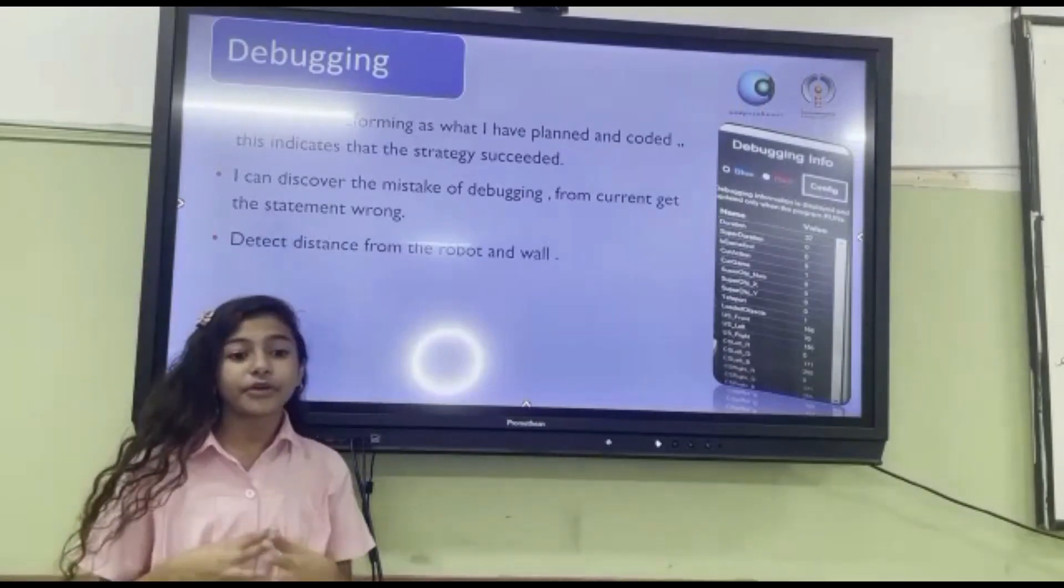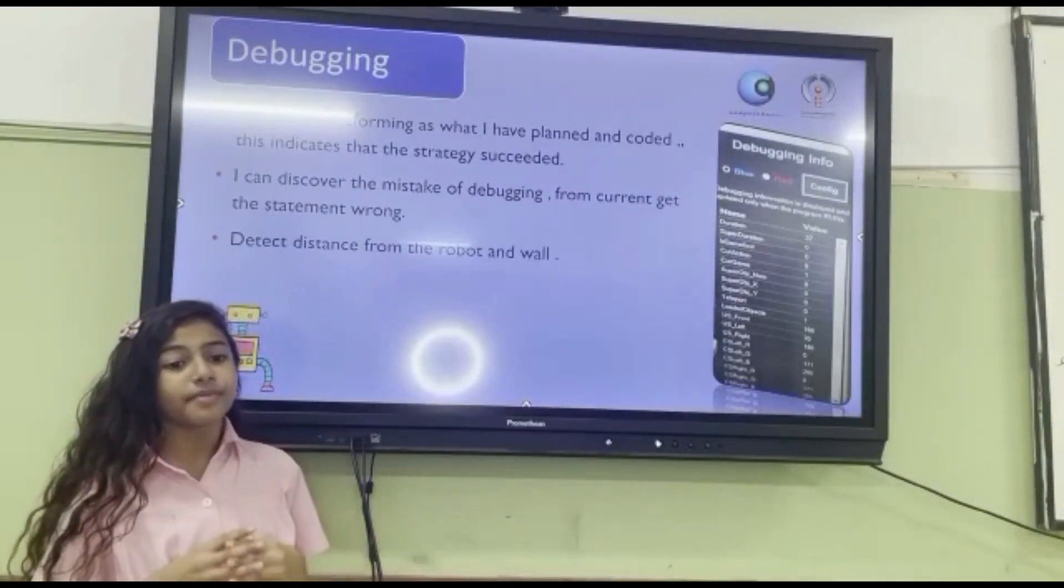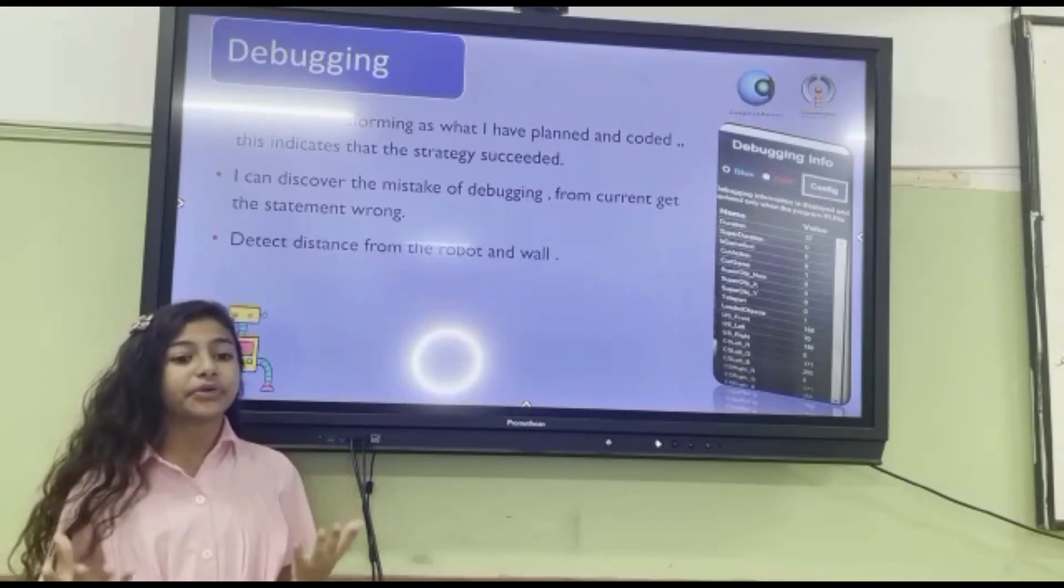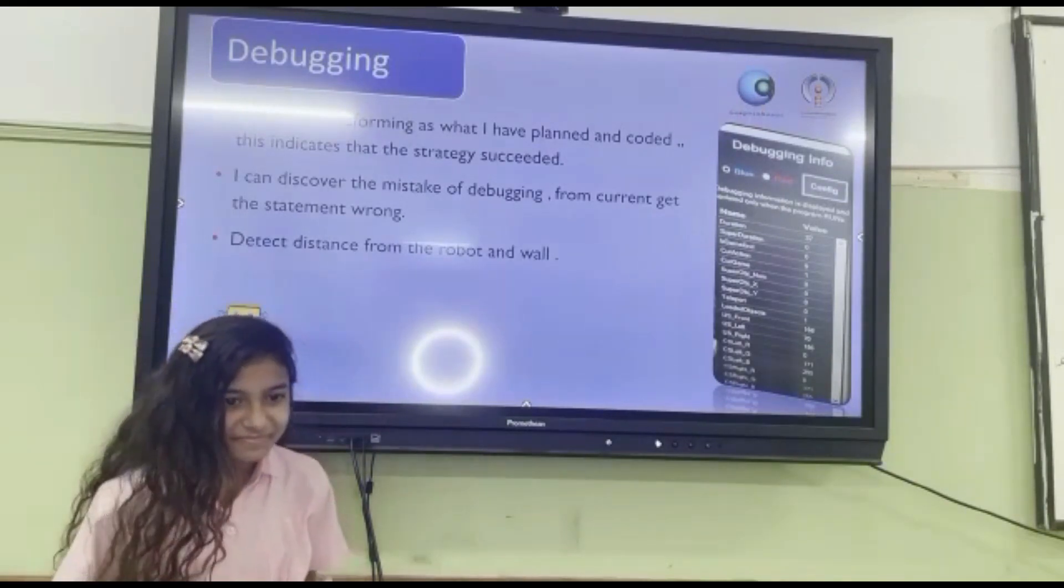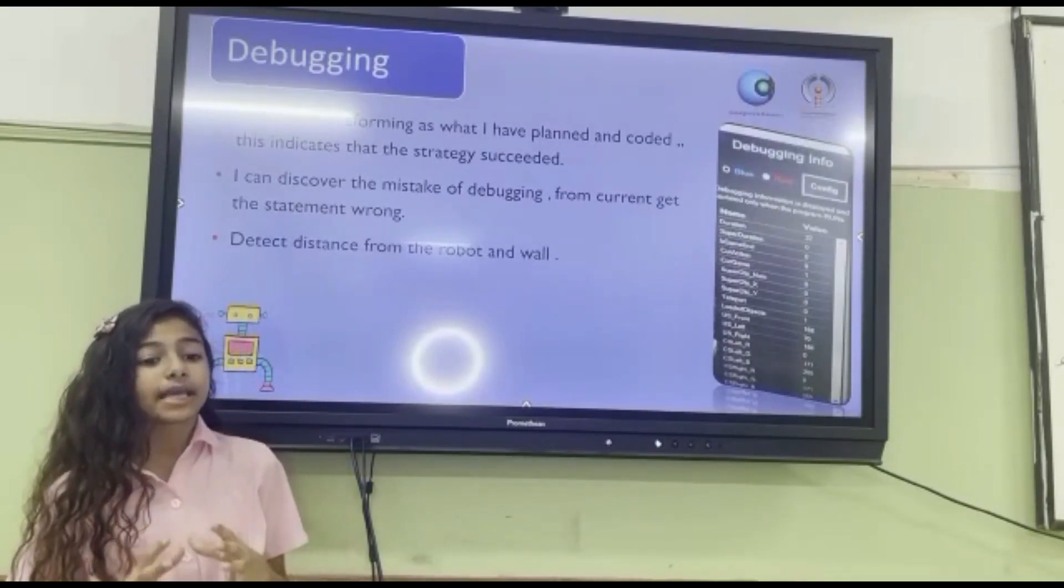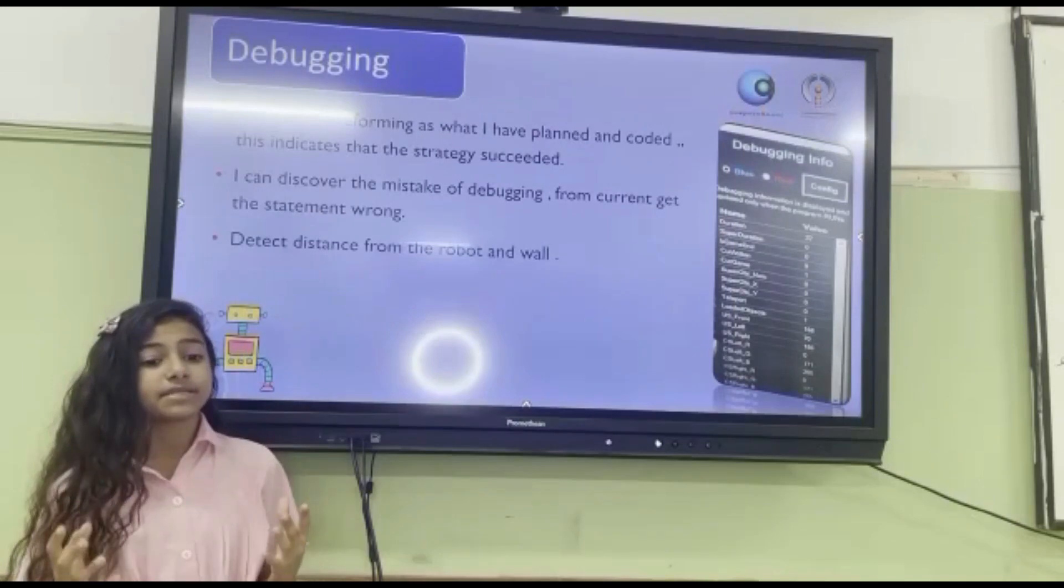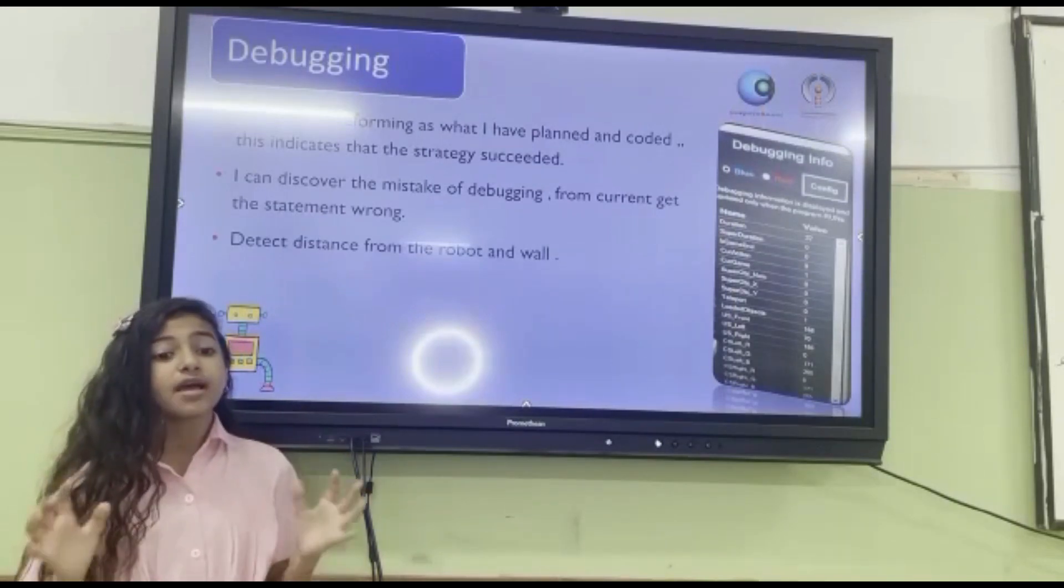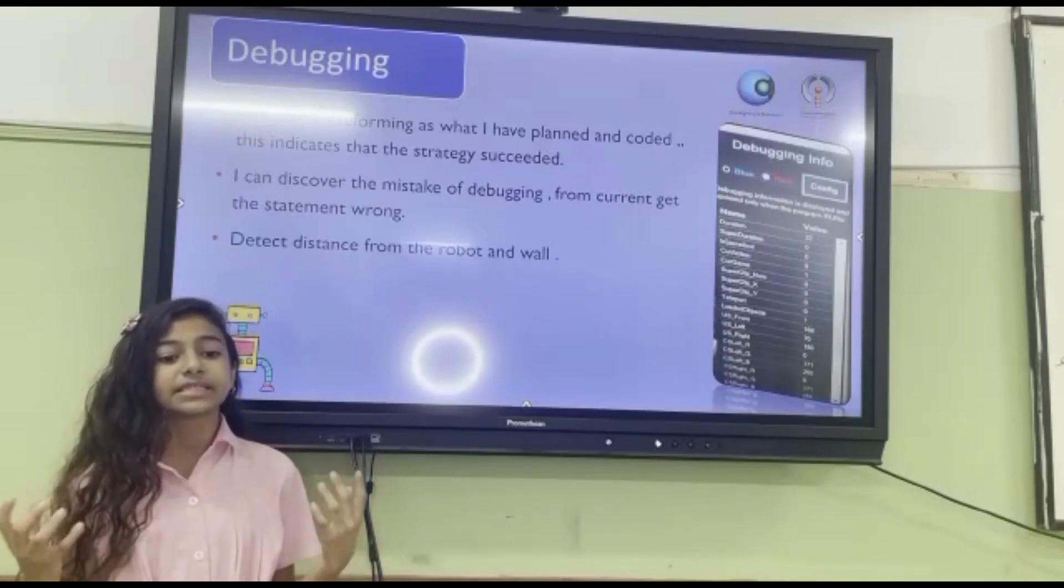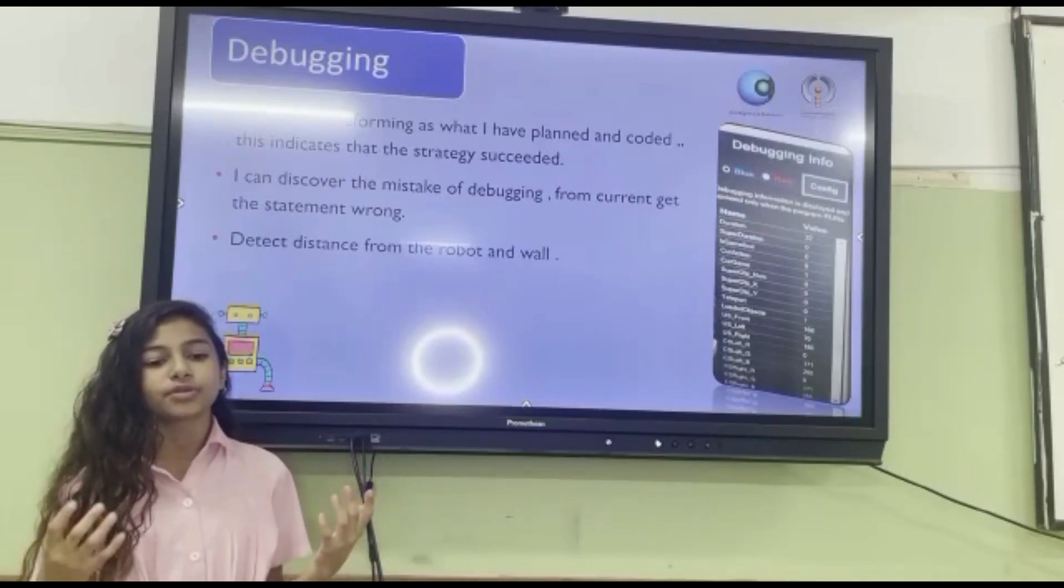Debugging. The robot is performing as what I have planned and coded. This indicates that the strategy succeeds. I can discover the mistakes in the code from the current statement wrong. Detect the distance from the robot and goal.